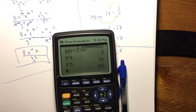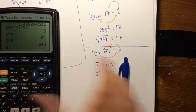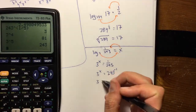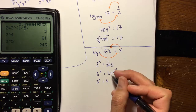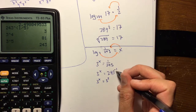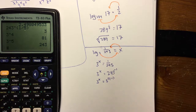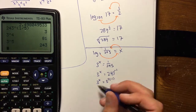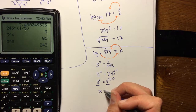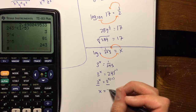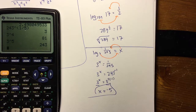So 3 to the x equals 3 to the fifth, and don't forget there's still that negative 1, so it's 3 to the fifth to the negative 1. Since the bases are exactly the same, we can set the exponents equal to each other: x equals negative 5. That's the answer.